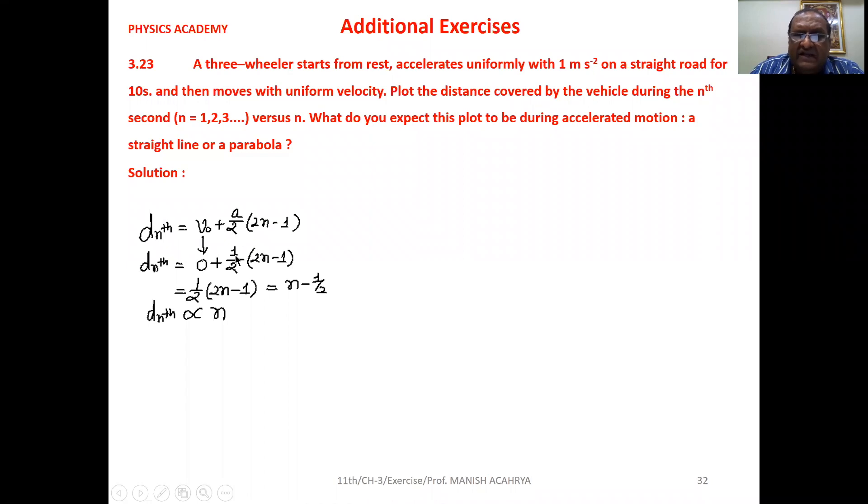Acceleration is 1. So we can write d_nth equals half into 2n minus 1, which equals n minus 1 by 2.